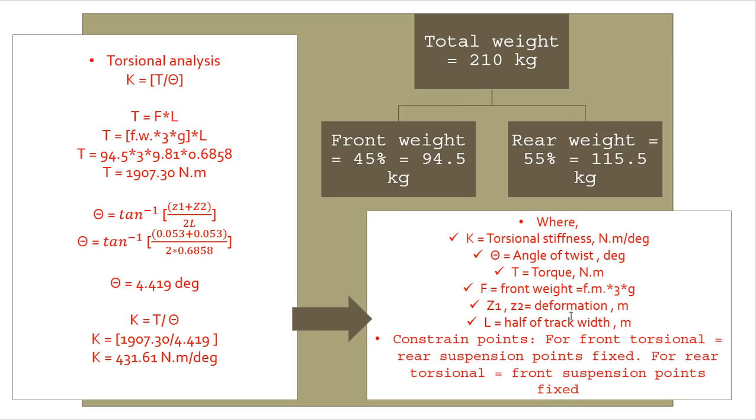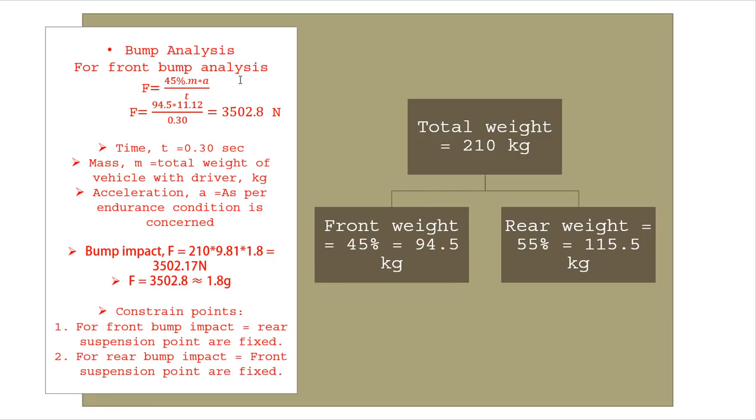Here theta is angle of twist, T is torque, F equals front weight - if it's rear torsional analysis, we will consider rear weight. Deformation z1, z2 we will calculate during analysis. We will show you in our next video while doing in ANSYS how we find out z1 and z2 values. L equals half of track width - we considered 0.68 meters. Constraint points: for front torsional, rear suspension points are fixed, and for rear torsional, front suspension points are fixed.